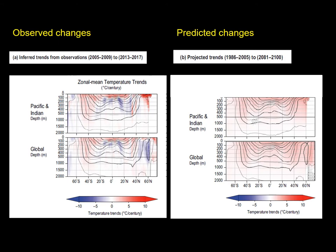What does that do to estuaries? Increasing air and sea temperatures will affect estuaries, with increasing air temperatures having a greater impact on temporary open-closed estuaries than permanently open systems. That's because temporary open-closed estuaries are cut off from the effect of sea temperatures for long periods and therefore respond to a greater degree to prevailing land, air and river water temperatures.